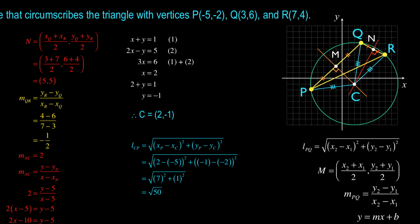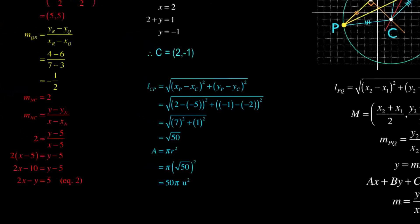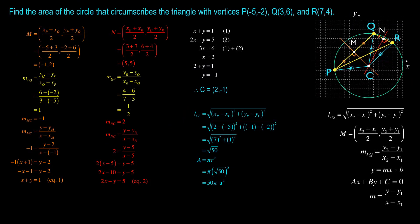Now using my area formula for a circle, which is area = πr², we get π times (√50)², we get 50π units squared. And that's all there is to that problem.